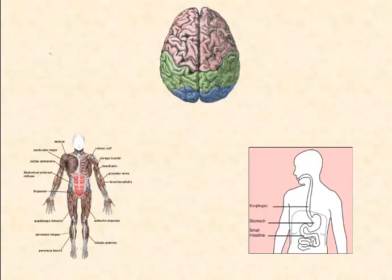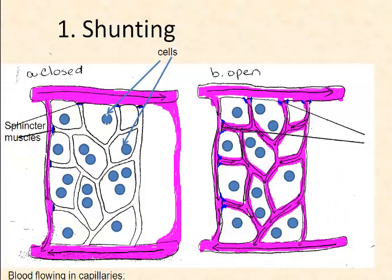satisfying the needs of the cells by constantly shifting which capillary beds are open at a given time. Some capillary beds will be open and some will be closed at any moment in time and this is constantly changing. This process is called shunting.